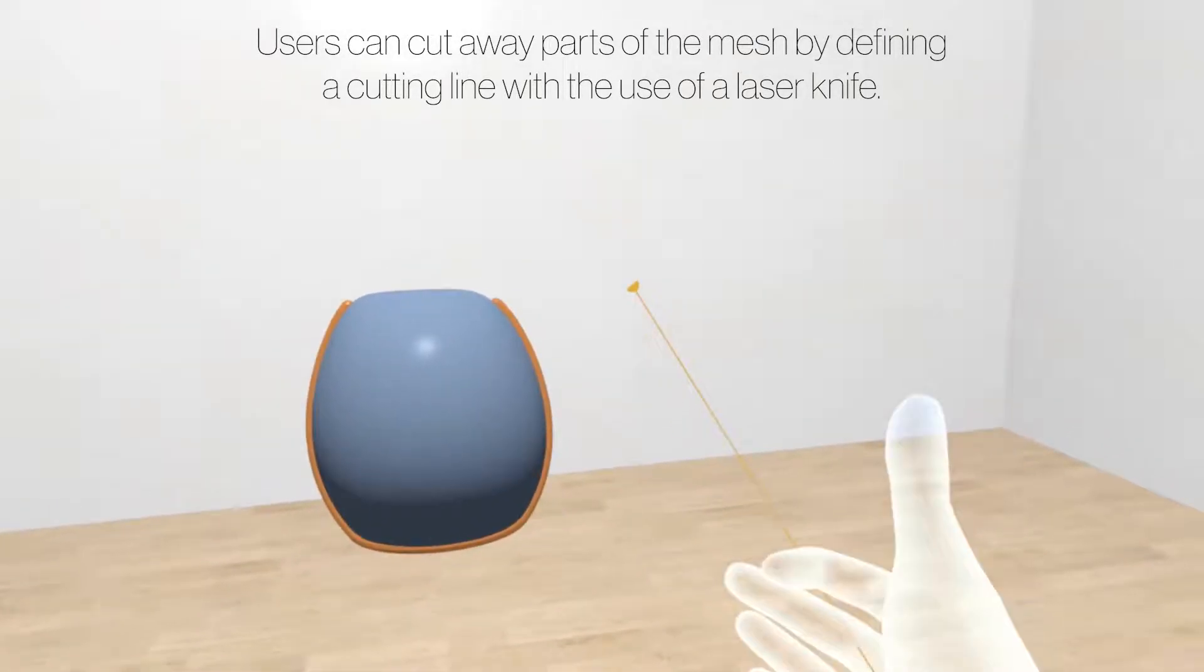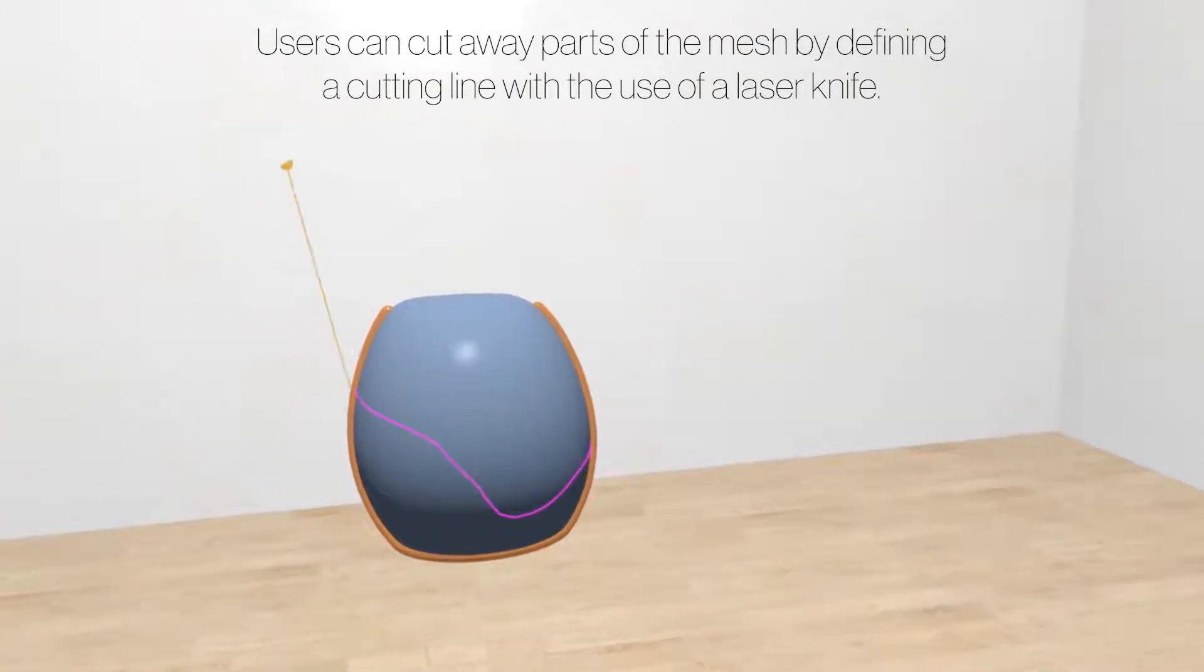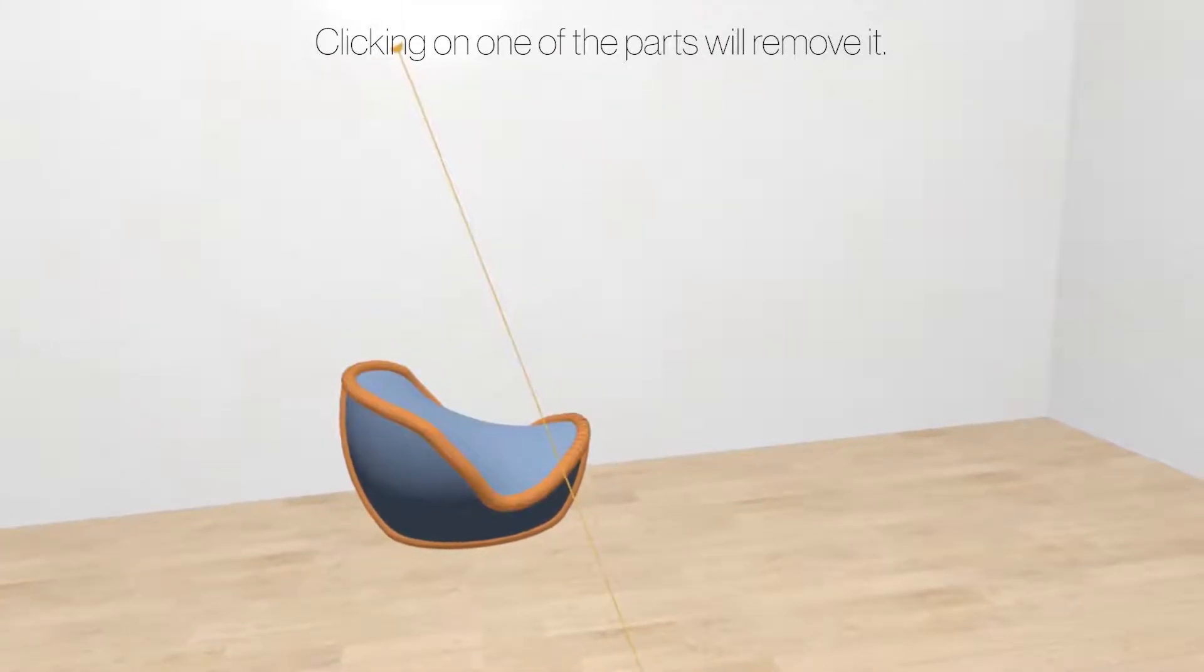Users can cut away parts of the mesh by defining a cutting line with the use of a laser knife. Clicking on one of the parts will remove it.